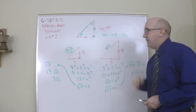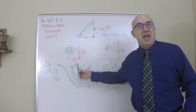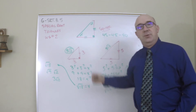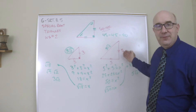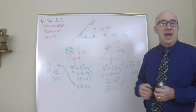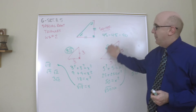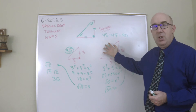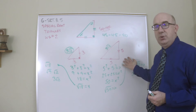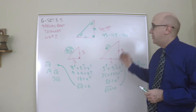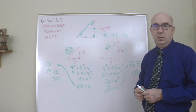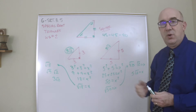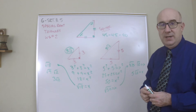Notice the pattern forming: 3, 3, 3√2 — and 5, 5, 5√2. The hypotenuse will always be √2 times bigger than the legs, or divide by √2 to get to the legs. The two legs will always be equal.